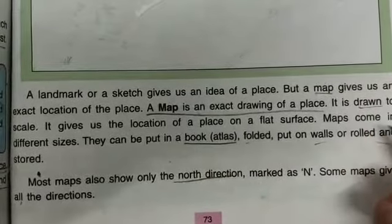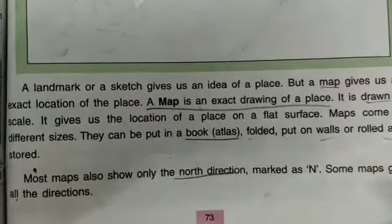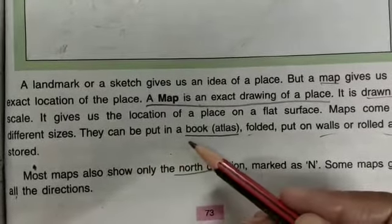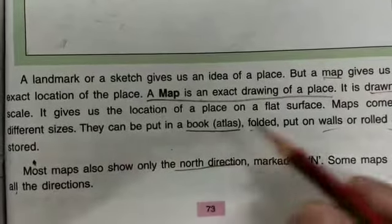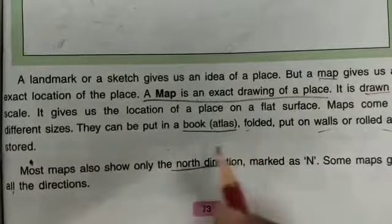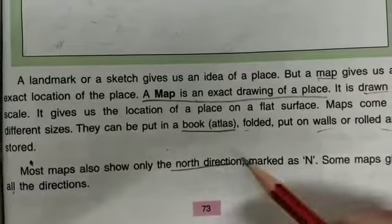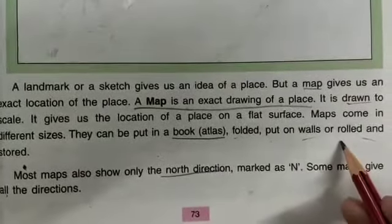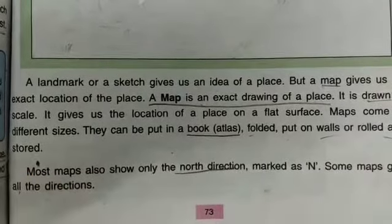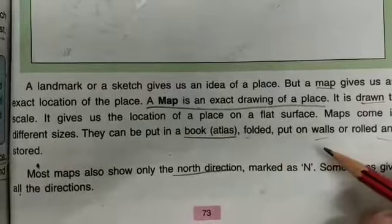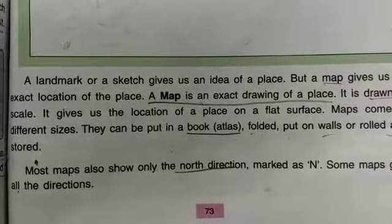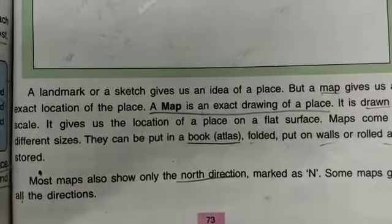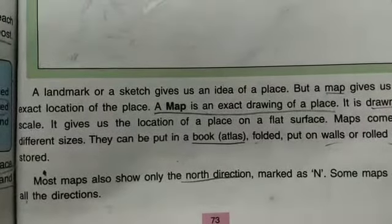Maps come in different sizes. They can be put in a book, which we call an Atlas. Maps can also be folded, put on a wall, or rolled and stored. There are different kinds of maps.